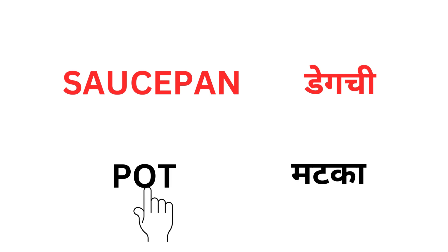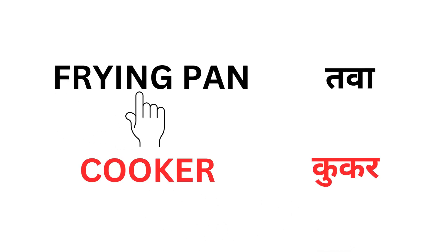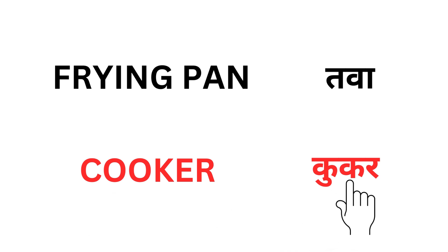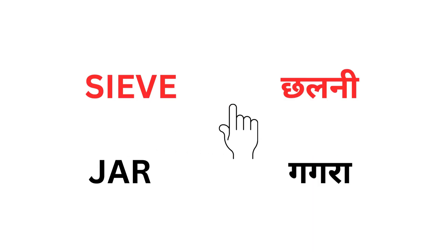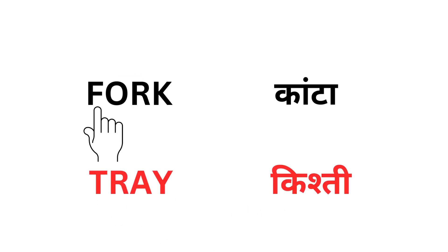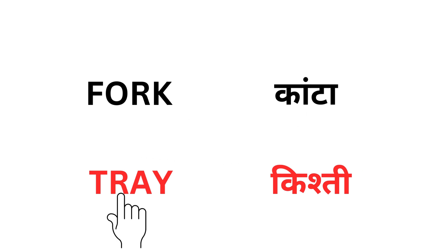Pot — Matka. Frying pan — Tawa. Cooker — Cooker. Sieve — Chalni. Jar — Gagra. Fork — Kata. Tray — Kishti.